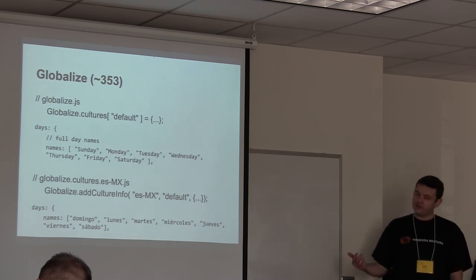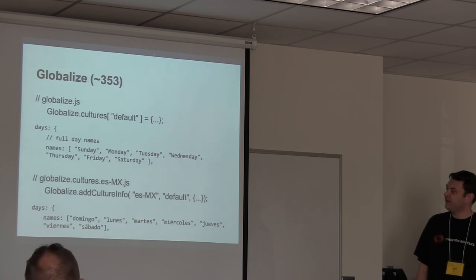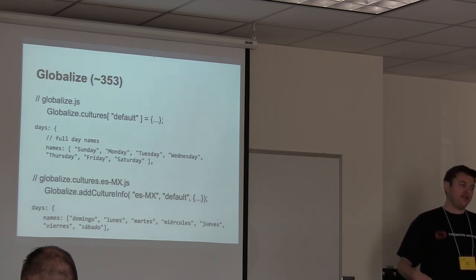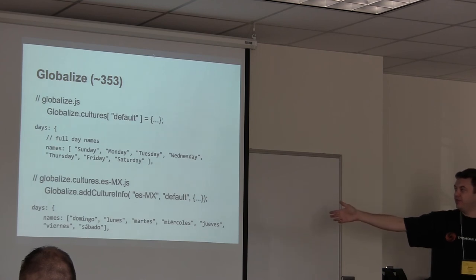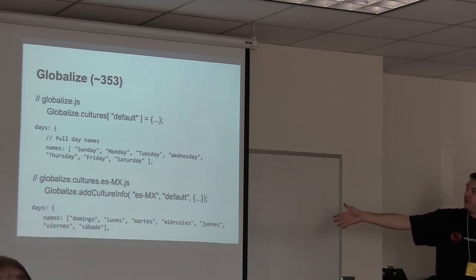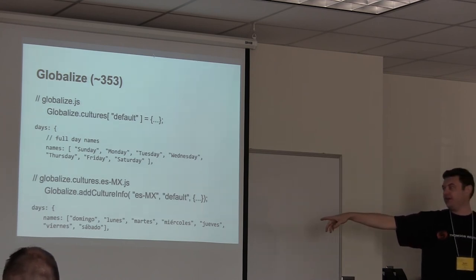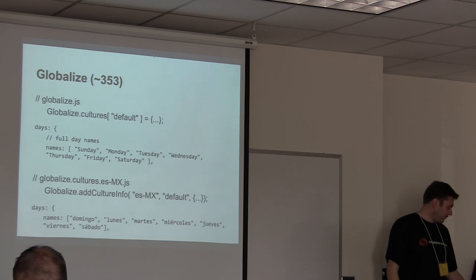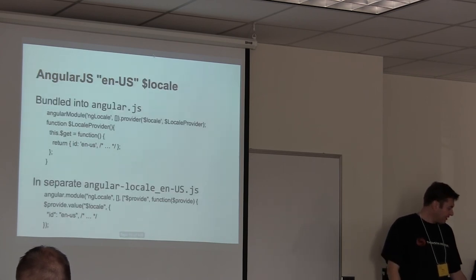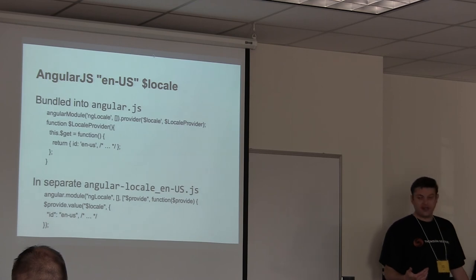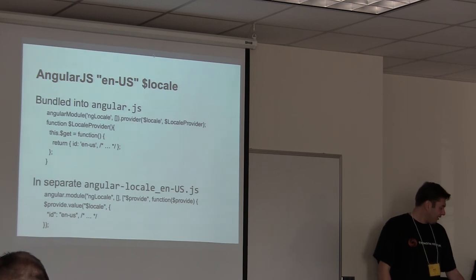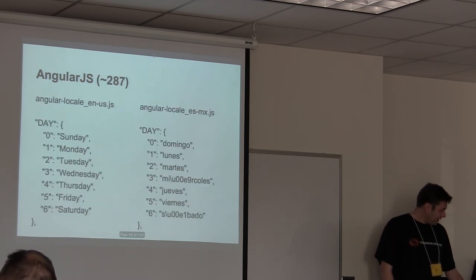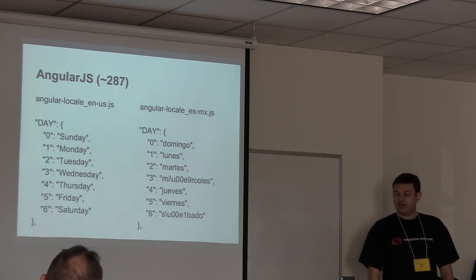Globalize has 353 JavaScript files with locales on their GitHub. They bake English into the core library, and pulling in additional files adds another culture. Angular has English bundled in but also provides separate external locale files — Angular has about 287 locale files available. You can see differences between the English and French versions, for example the days of the week.